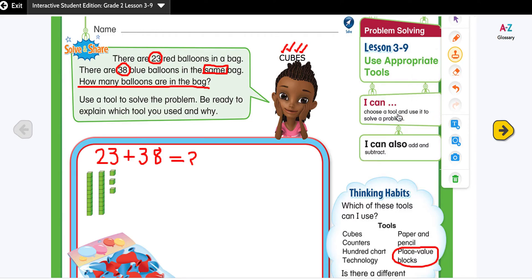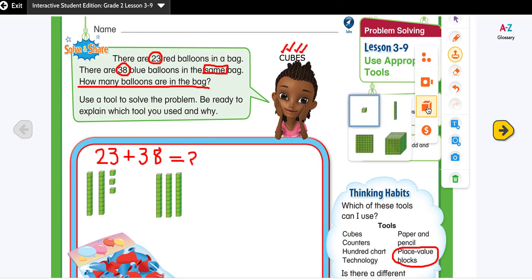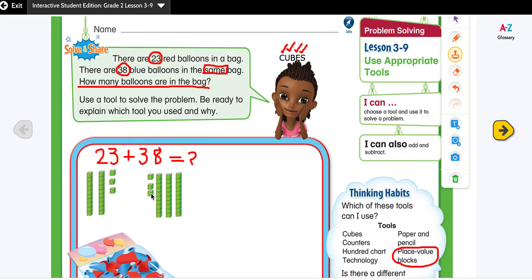Our next number is 38. 10, 20, 30. Now we're going to add the ones in here. 31, 32, 33, 34, 35, 36, 37, and 38. So we have 23 and 38. Now we need to add them together.